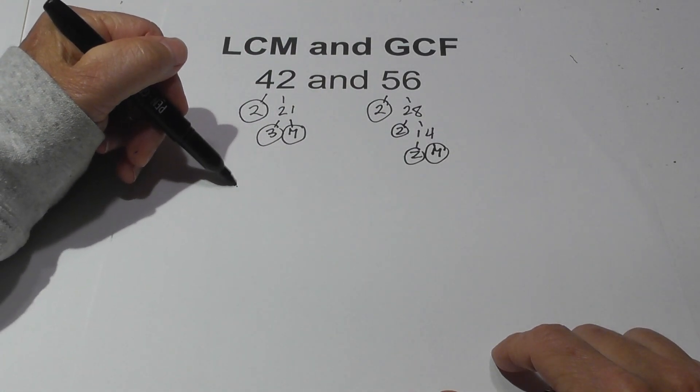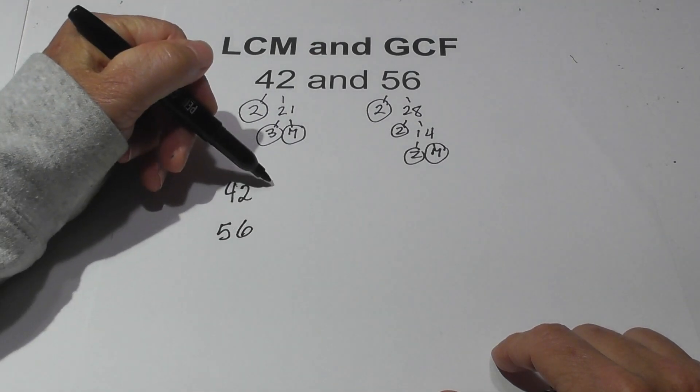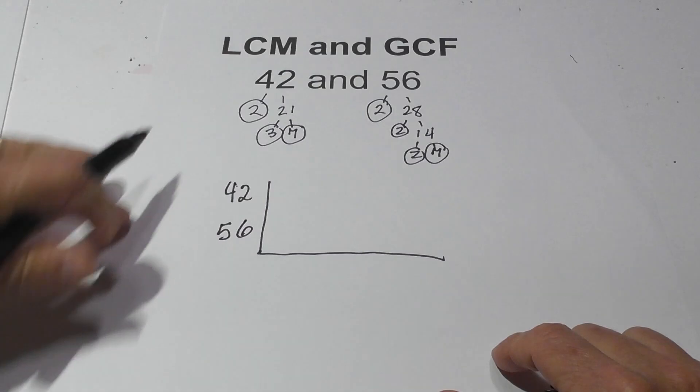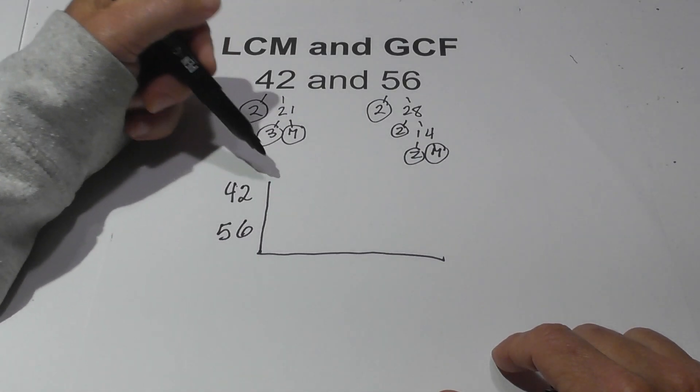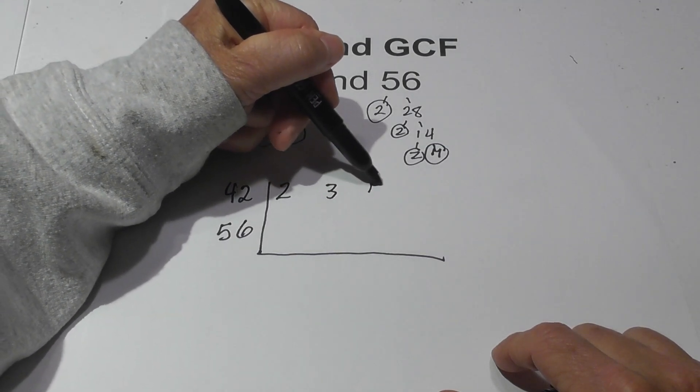Next, what I do is I put them in a chart, and the goal of the chart is just to organize your numbers so you don't make mistakes. So I'm going to write for 42, I'm going to write 2, 3, and 7.